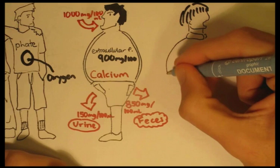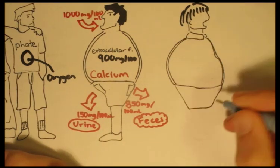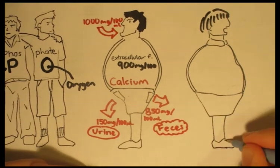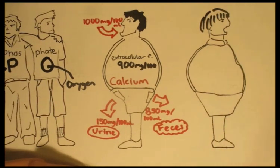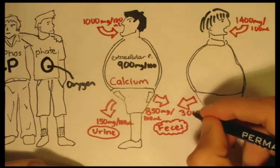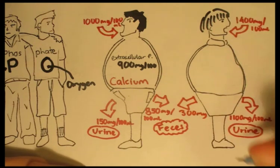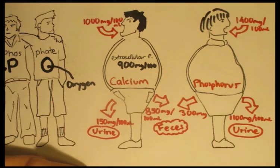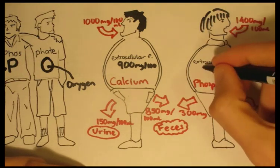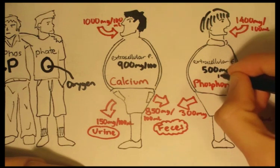Now phosphorus on the other hand, the daily consumption is about 1400 mg per 100 ml. 1100 is secreted as urine and 300 mg per 100 ml as feces. The extracellular fluid contains approximately 500 mg of phosphorus, which exchanges with the bones and cells of the body.